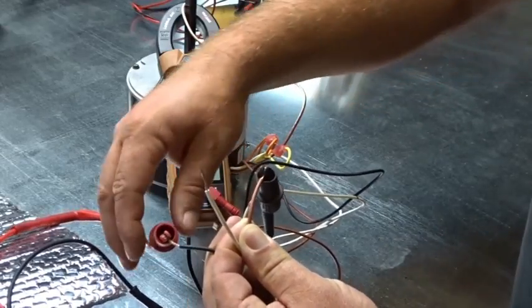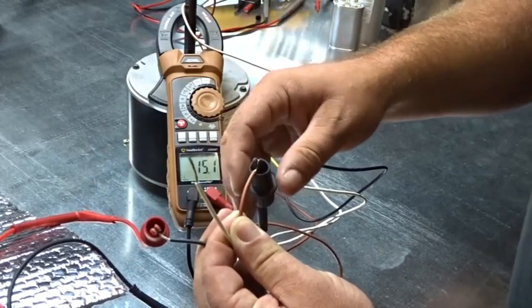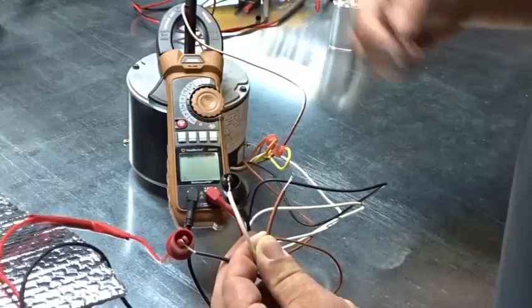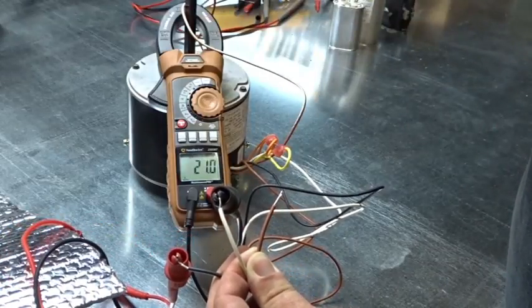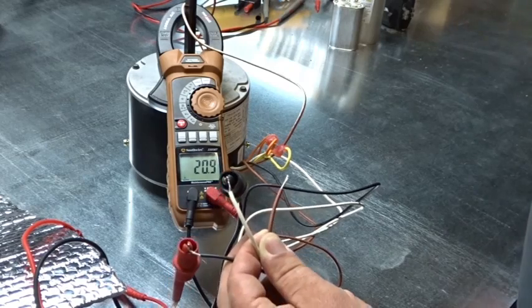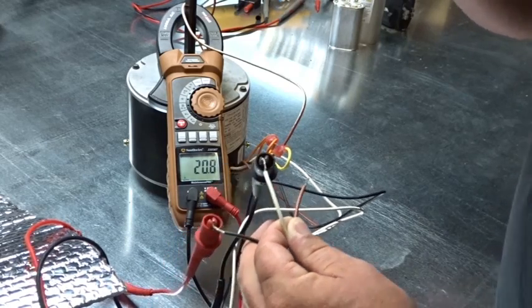And we have 21 ohms. So it looks like the motor is good as far as the ohms in between the different windings. We can now see how we wire them to different capacitors.